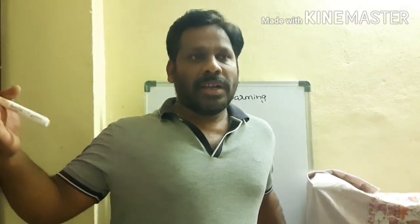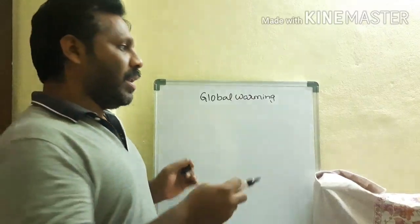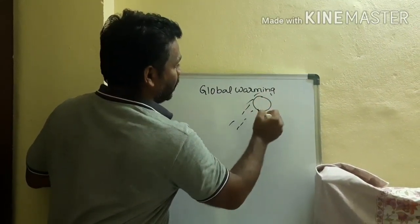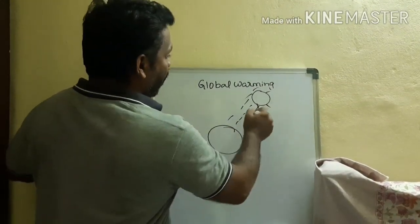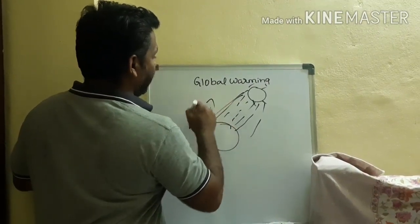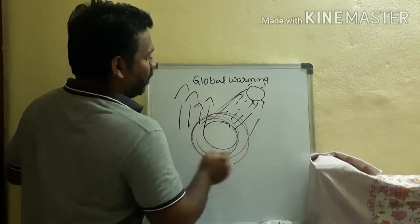Here the point is: how does global warming happen? The atmosphere is there. When the sun rays fall on the earth and reach us, the atmosphere will trap some of those rays. If all the sun rays fall here only and are not radiating back — not reflecting back — what will happen? It may be burning completely.